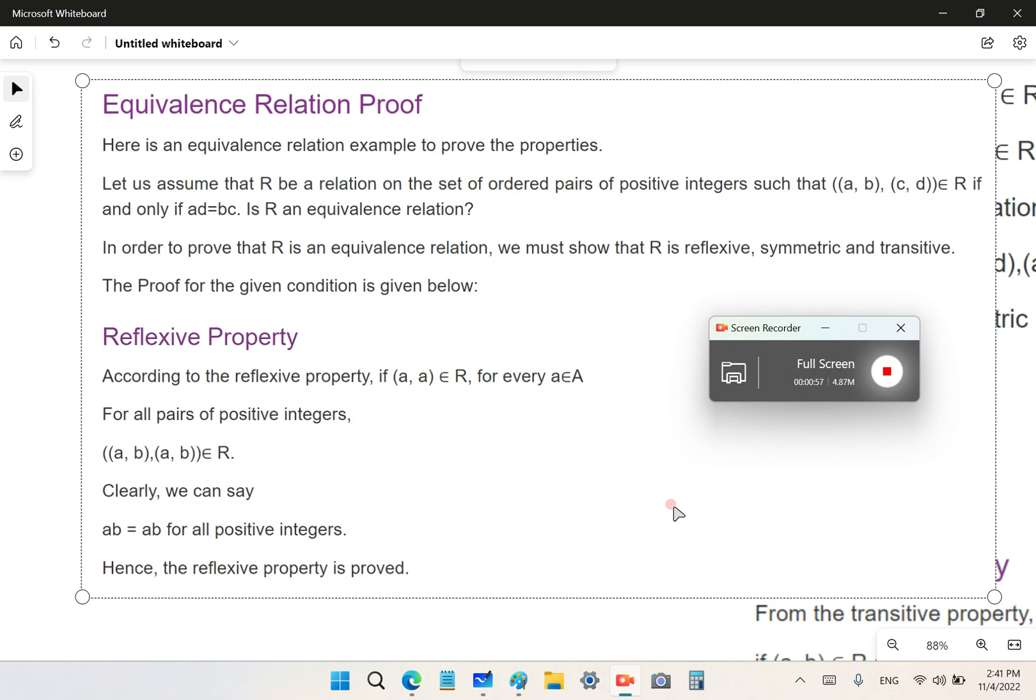So this is text I copied out from a university website, and it is normally how this garbage is taught. So first of all, it says, let us assume that R be a relation on the set of ordered pairs of positive integers if and only if AD is equal to BC. So that's a given. And then it says, is R an equivalence relation?